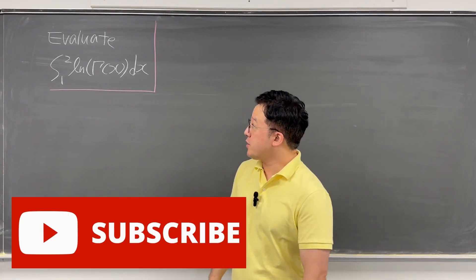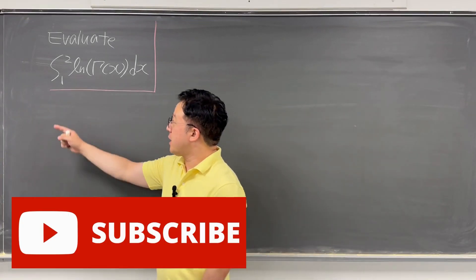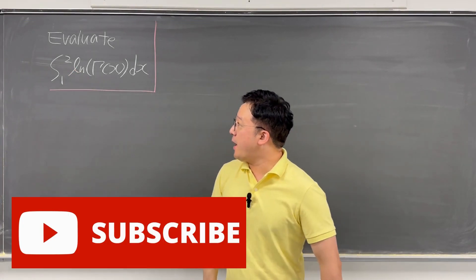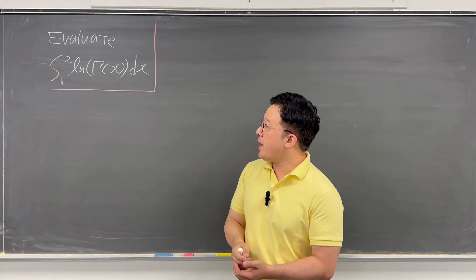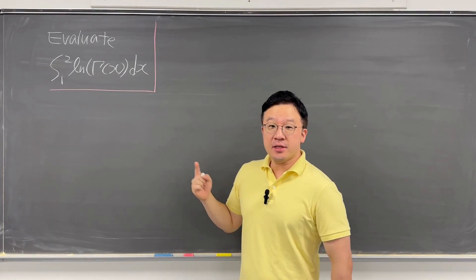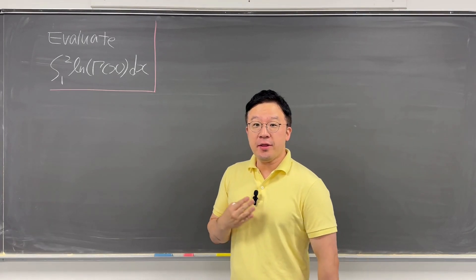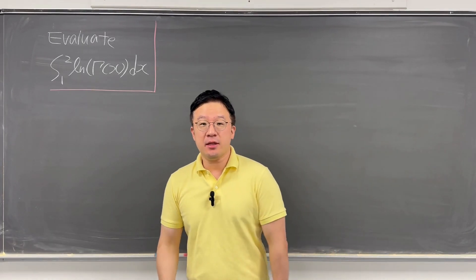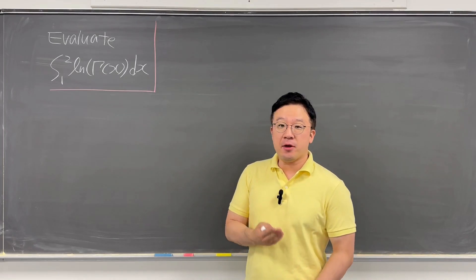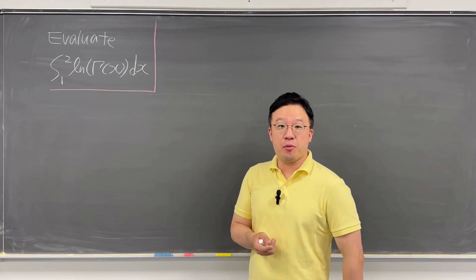Okay, here's the question. Evaluate this integral from 1 to 2 of ln(Γ(x)) dx. For this integral, I'll use three different techniques: integration by parts, the digamma function, and Stirling's approximation.